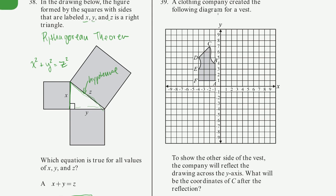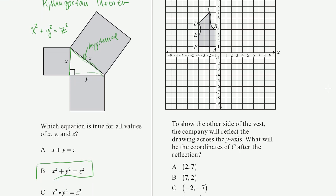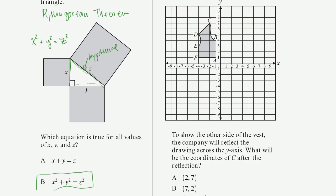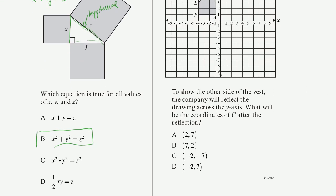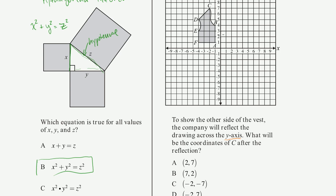Problem 39. A clothing company created the following diagram for a vest. So I guess this is somehow a vest. Maybe it's half of the vest, because I didn't see how I could put that on me. To show the other side of the vest, OK, right. So this was half of the vest. To show the other side of the vest, the company will reflect the drawing across the y-axis. What will be the coordinates of c after the reflection? So when they say reflection, they mean literally you just take the image of this and you flip it over onto the right-hand side.